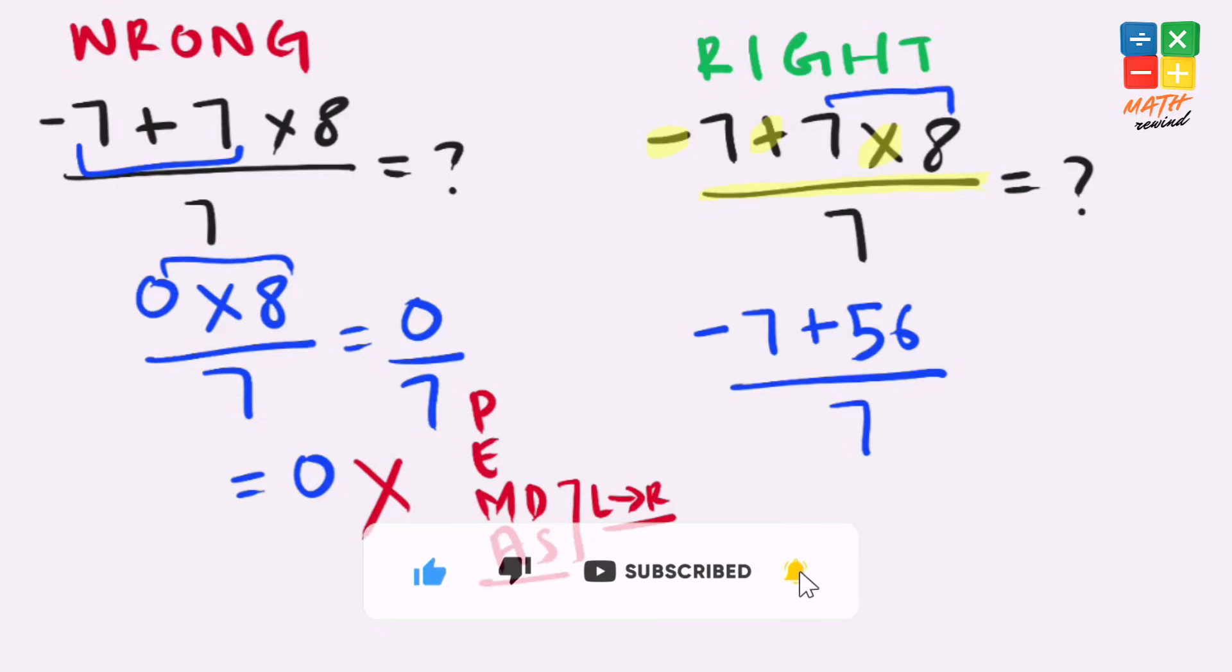Now in the numerator if you solve minus 7 plus 56 it leaves us with 49 and we have 7 present in the denominator. 49 divided by 7 that leaves us with 7 which is the final and correct answer to this problem.